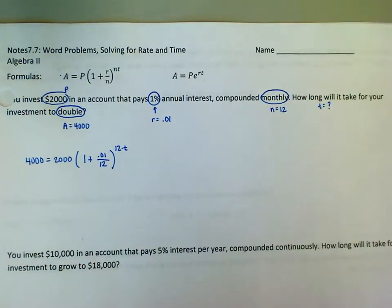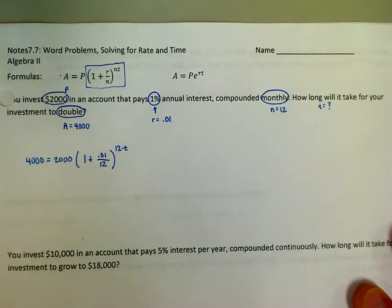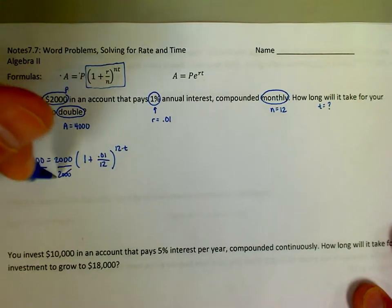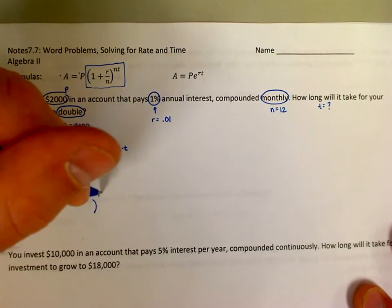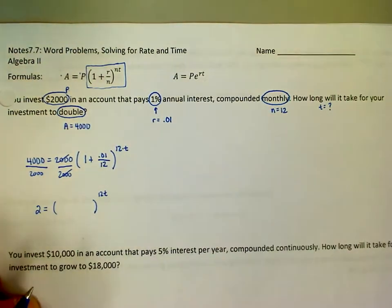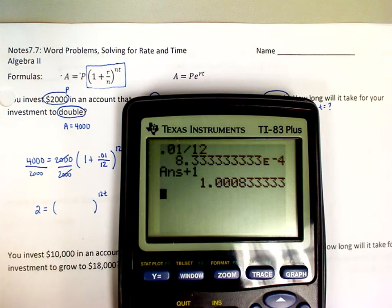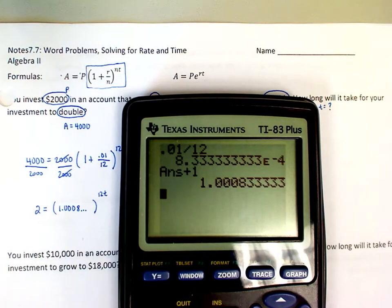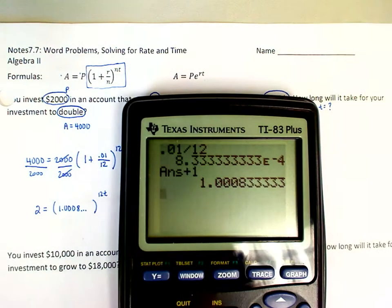I always do the same thing as the very first step: I need to get the base with the exponent by itself first, which means moving the principal away. So the first step in every problem in today's homework is dividing by the principal — in this case, 2,000. So 4,000 divided by 2,000 gives 2, the 2,000s cancel, and I'm left with 2 equals (1.0008333...) raised to the 12T. It's very important we do not round this value — there's a huge difference between rounding to 1 versus leaving it as 1.0008... So we've got to leave it as is.